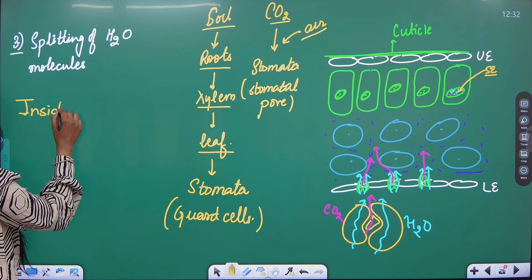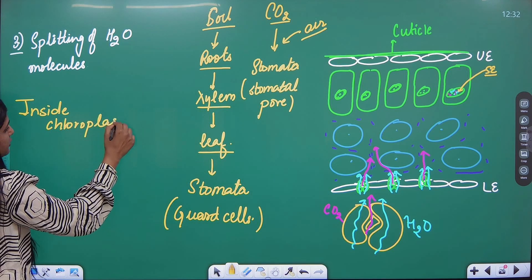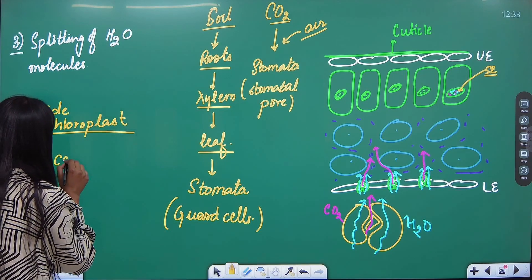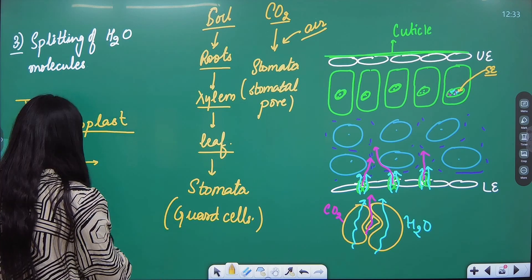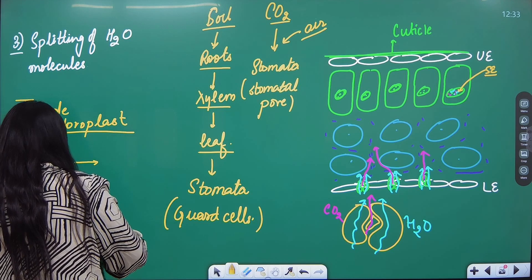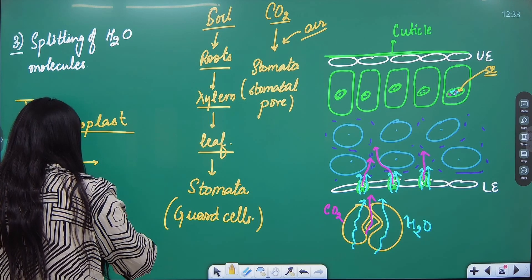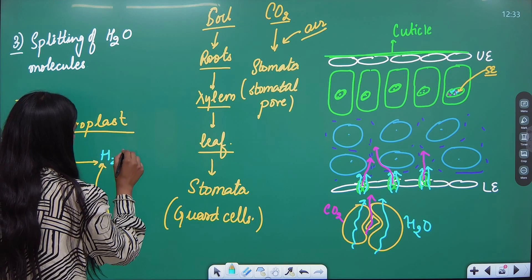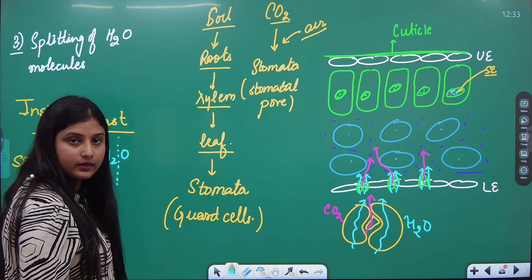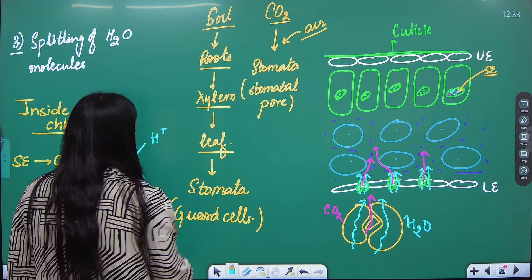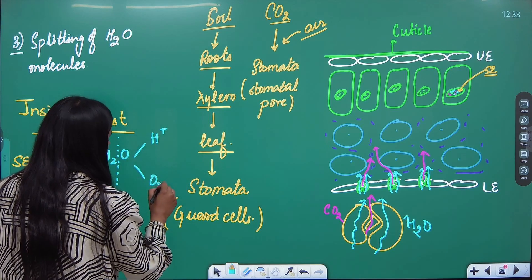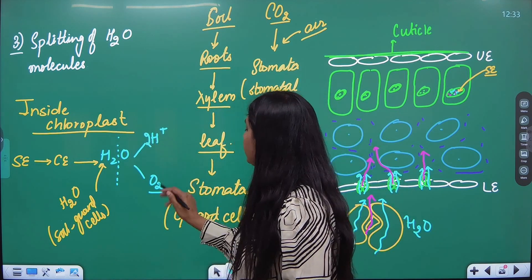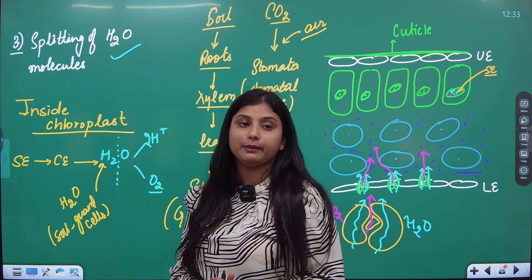Inside chloroplast, solar energy came. We converted solar energy into chemical energy. What did chemical energy do? The water that traveled from soil through guard cells to chloroplast, that water was split there. It broke down into H positive and oxygen gas. Our hydrogen separated here and our oxygen separated. Concluding our third step - splitting of water molecules.